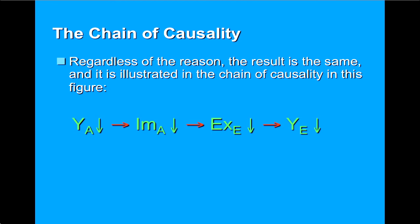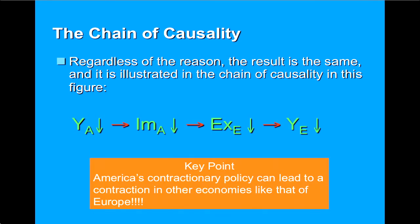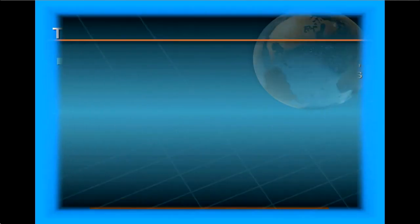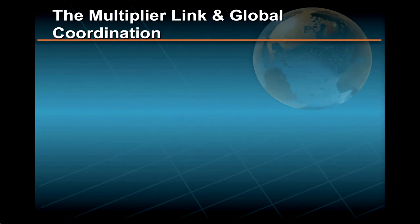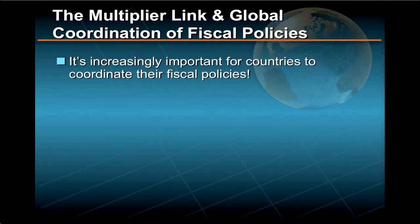And the flip side of this coin, of course, is that as European exports, EXE, to the U.S. fall, so too does European income, YE. In other words, America's domestic fiscal policy can not only lead to a contraction in the American economy, it can also function as a contractionary fiscal policy for Europe as well. In some textbooks, this chain of causality is referred to as the multiplier link. And from this multiplier link, you can perhaps see why it has grown increasingly important for countries to coordinate their fiscal policies.